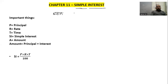In this chapter, we will study these key terms: one is Principal, we denote it by P. Then Rate, we denote it by R. Then Time, we denote it by T. Then Simple Interest. This is Amount.